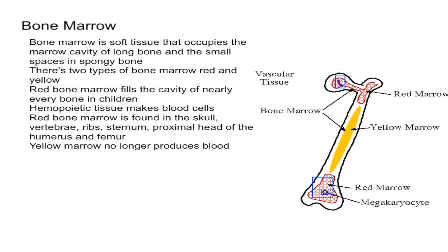In adults, you can find red bone marrow in the skull, the vertebrae, the ribs, the sternum, and the proximal heads of the humerus and femur. By proximal heads, we mean the end that's closest to the middle of our body.